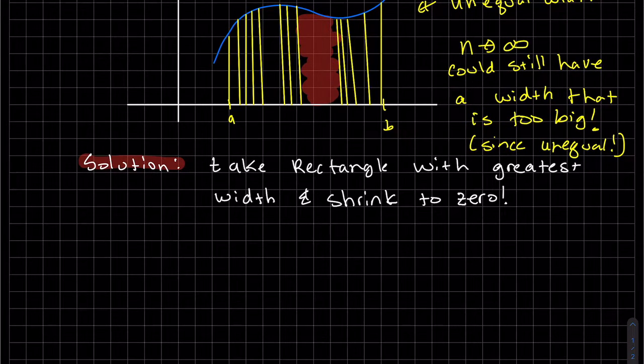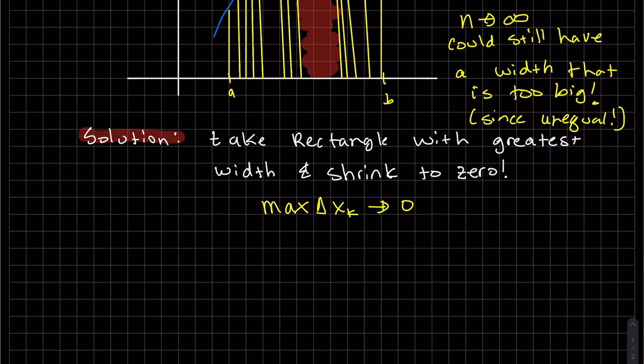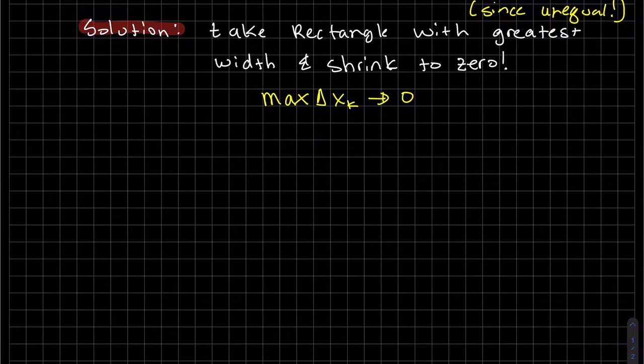We take the max delta x_k and shrink it to zero. That's the limit that we're going to take. So what we get is the area under the curve, a new area under the curve definition.